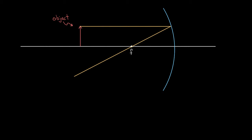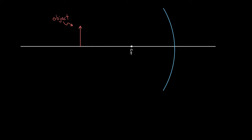These rays are reversible. If you send rays back along the way they came, they'll just retrace the path they came along the other way. So if I send a ray parallel, it gets sent through the focal point. But if I send a ray through the focal point, it will get sent parallel. In other words, I can draw this ray right here — the one that goes from the tip of the object through the focal point — and that's gonna get sent parallel.